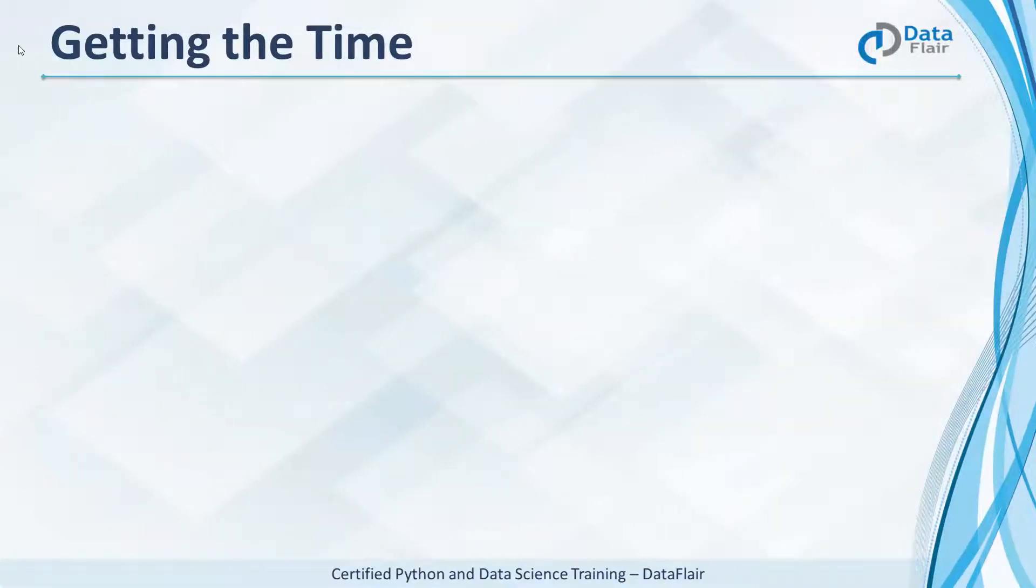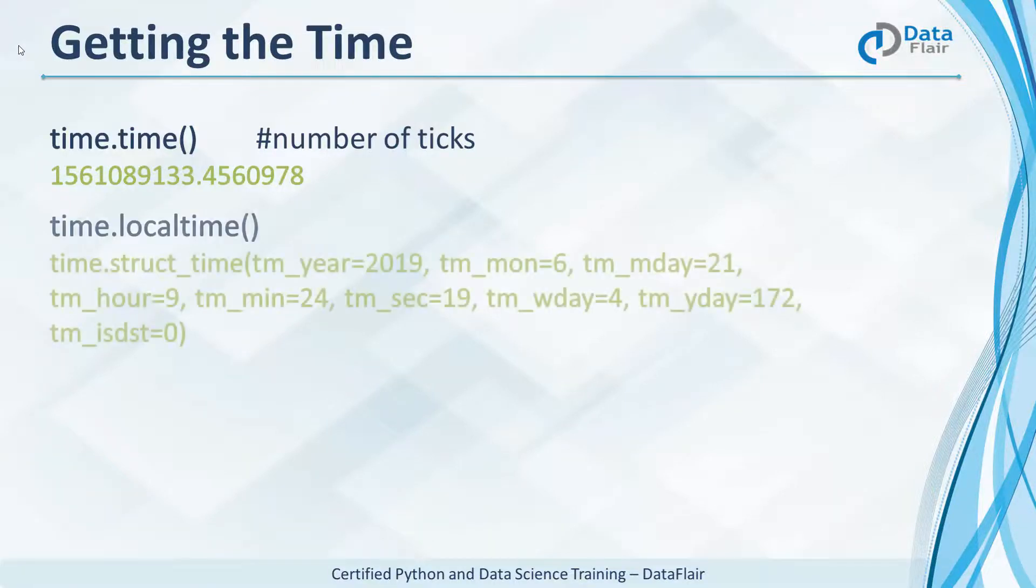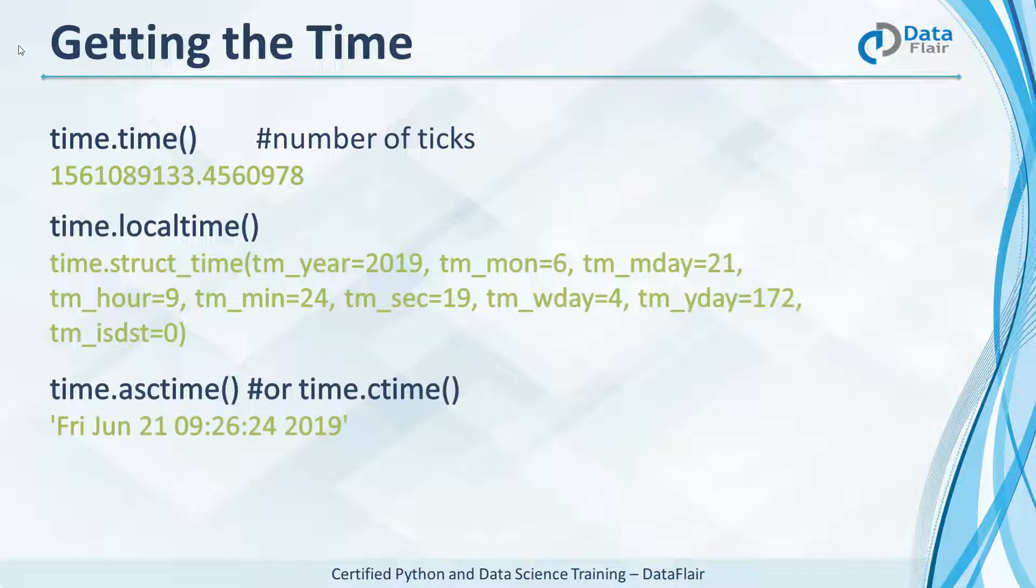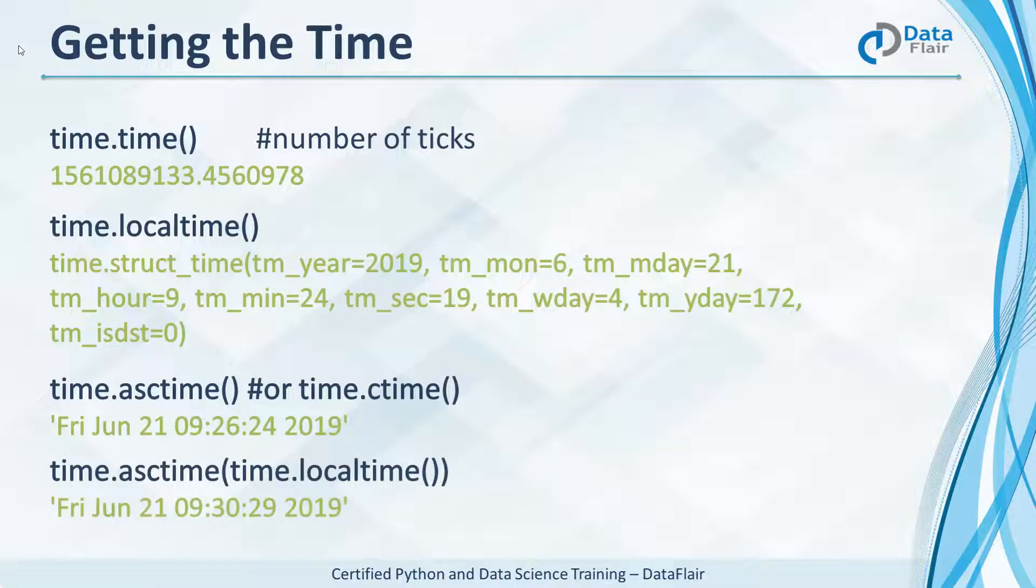Let's learn to get the time. This is the number of ticks from the epoch, and this is the local time as a tuple. We can make it a bit more readable, and we can also pass the local time to this function here. But we cannot feed it the result of time.time.